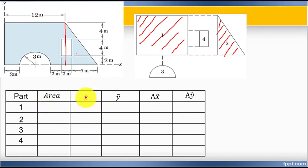The table includes columns for parts, area, x-tilde, y-tilde. X-tilde is the x coordinate from the origin to the shape center. Y-tilde is the y coordinate from origin to the shape center.